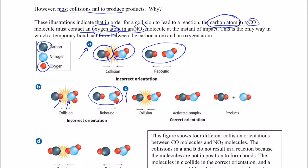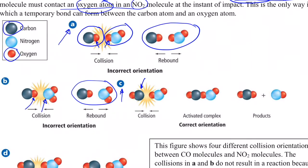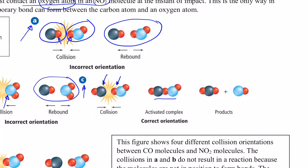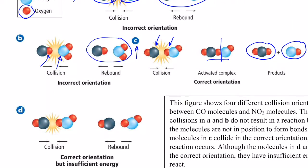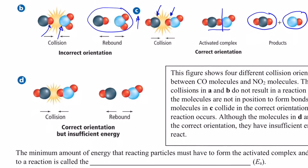In scenario C, the carbon atom in carbon monoxide collides with an oxygen atom in nitrogen dioxide. When that happens, they form an intermediate activated complex that exists for just a moment. The oxygen that CO collided with sticks to the carbon atom, and we end up forming carbon dioxide and nitrogen monoxide — that was an effective collision in terms of orientation.